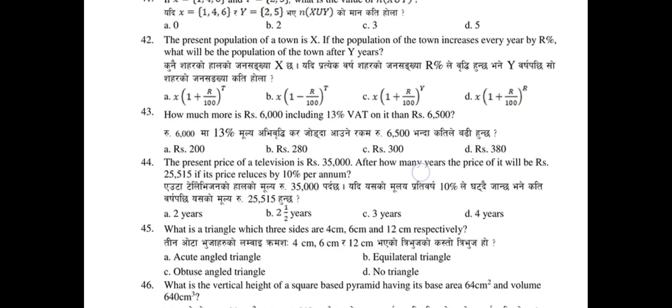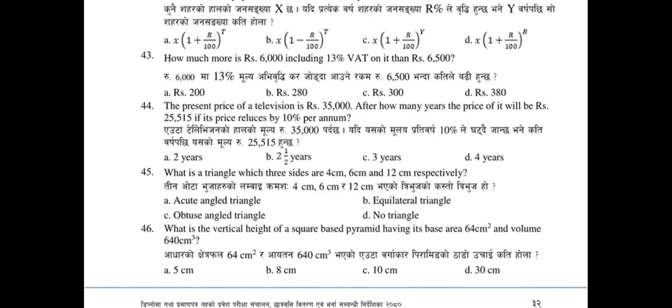Question 43: A group of 6,000 including 13 percent — the answer involves 13 percent applied to 6,000, giving 6,500. That is the answer to question 43.